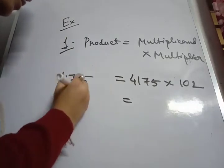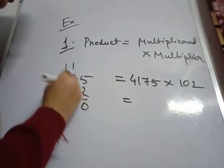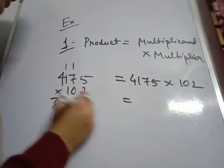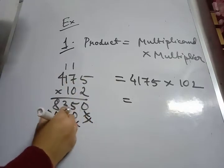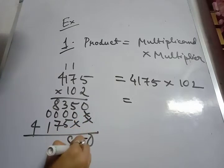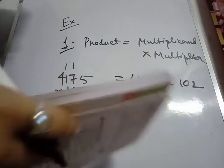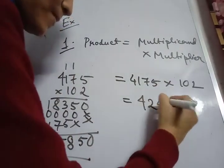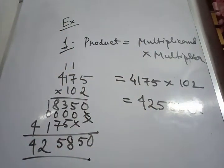So let's multiply this one. 4175 times 102. 5 times 2 is 10, 7 times 2 is 14, 15, 2 times 1 is 2, 3, 4 times 2 is 8. This is 0, 5, 7, 1, 4. So 0, 5, 8, 15. So 0, 5, 4, 2, 5, 8, 5, 0. Is it okay?